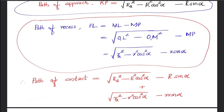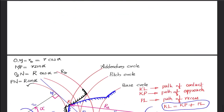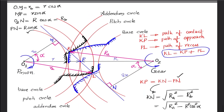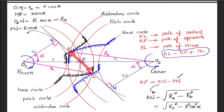This distance is measured along the straight line — the common tangent to the base circles passing through the pitch point. In the next video, we will discuss the arc of contact, contact ratio, and solve a problem on this topic. Thanks for watching.